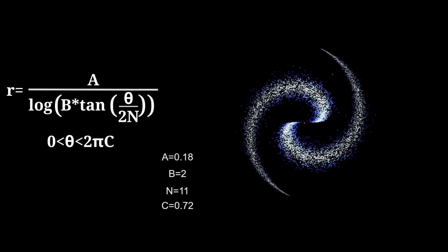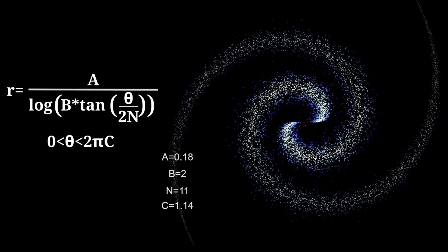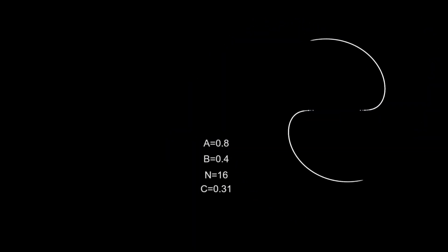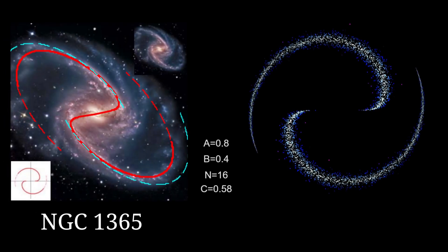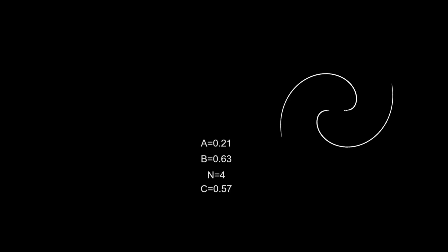I add a parameter C to control the length of the spiral arms. Many galaxies, including Grand Design and Barred Spirals, fit remarkably well with this formula.